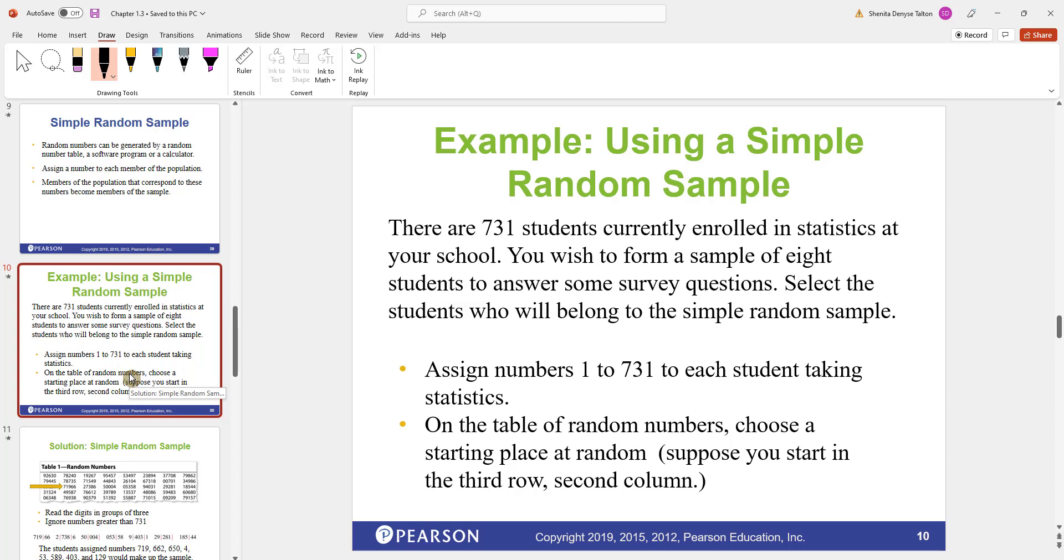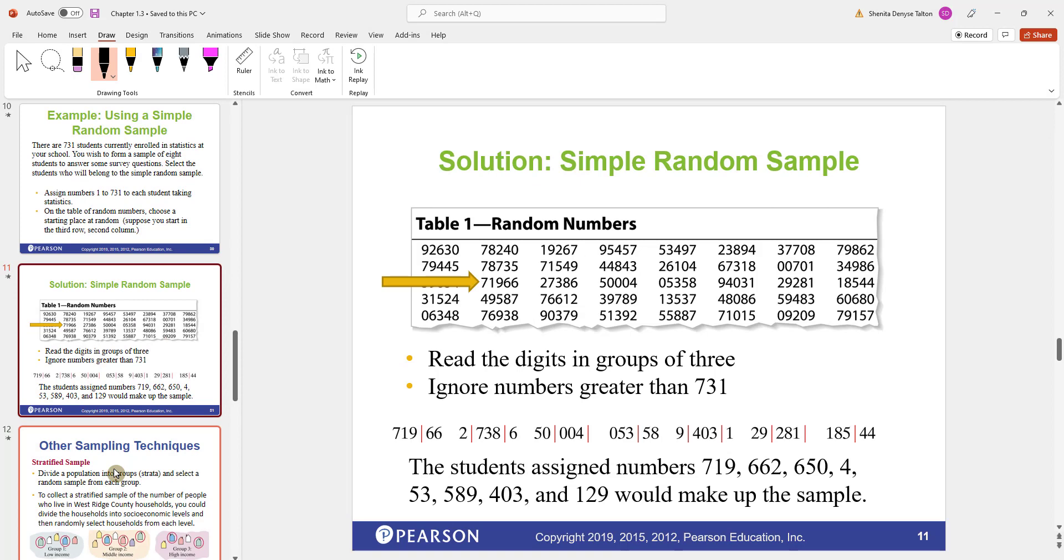Here's an example. There are 731 students currently enrolled in statistics at your school. You wish to form a sample of eight students to answer some survey questions. You're going to select the students who will belong to the simple random sample. What you'll do is give each student a number, up to 731 since you have 731 students. You can use a random number table, and it has just random numbers. Here's an example of a random number table. You have to go by threes because the highest number has three numbers. 731 has three numbers. So what you do is you can start anywhere on this random number table. You just pick a random spot and you go by threes. We know that we can pick from one all the way up to 731.